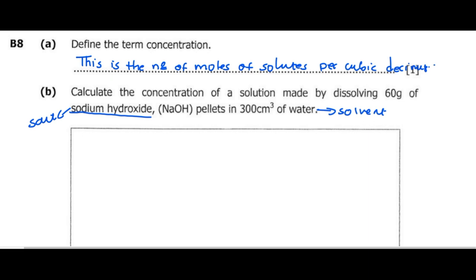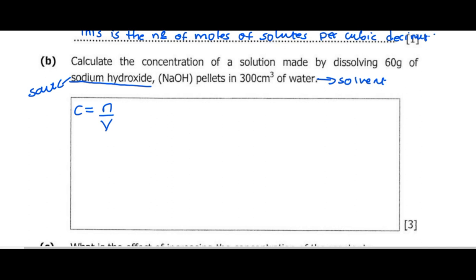The formula for concentration is C equals n over V, where n represents number of moles and V is the volume in decimeters cubed. Looking at the data we have, we have mass in grams, so we are going to use 60 grams to find the number of moles for sodium hydroxide.